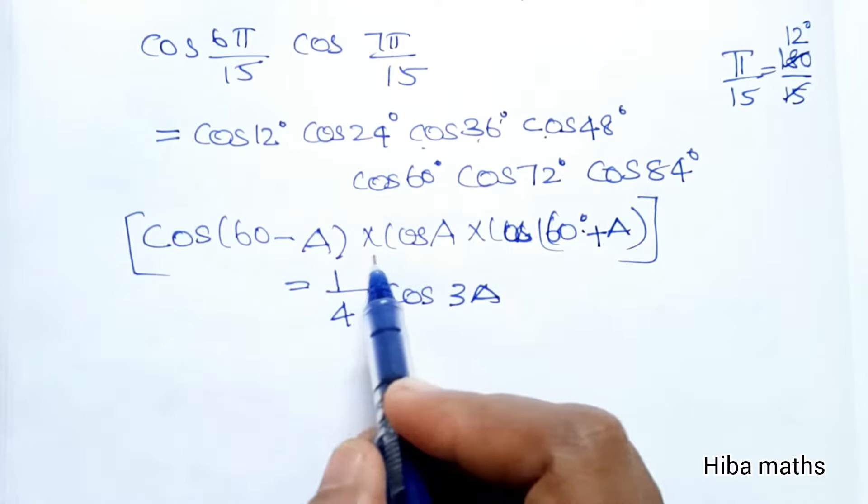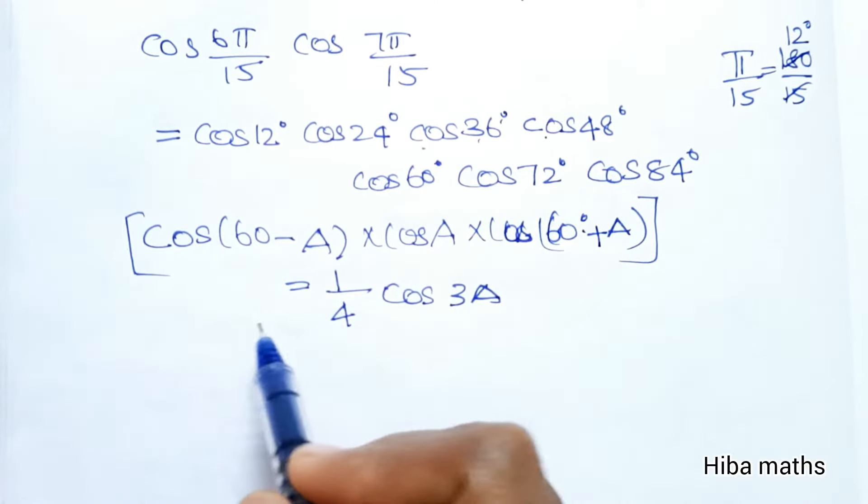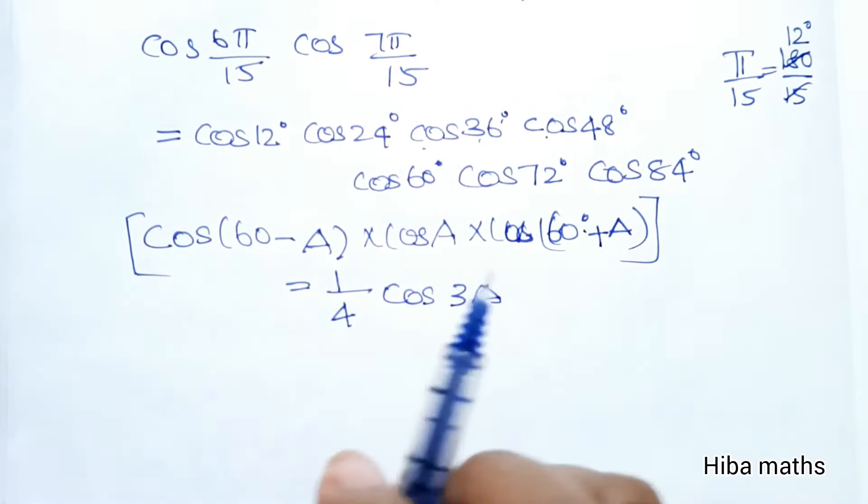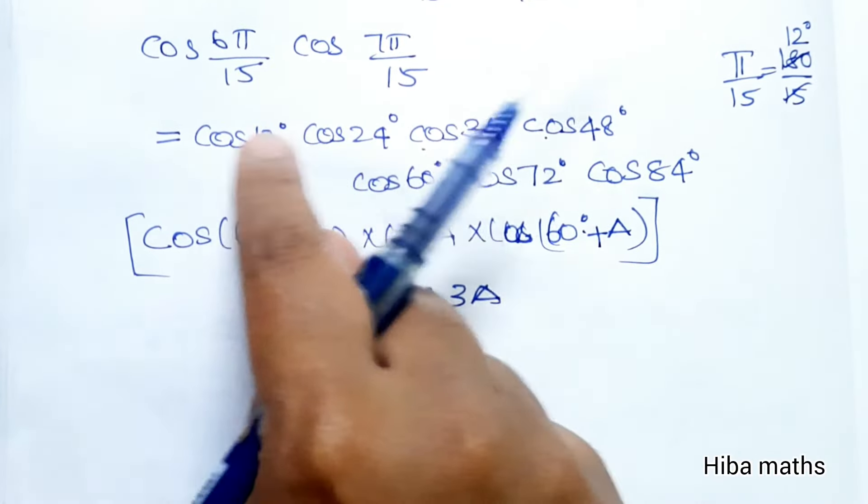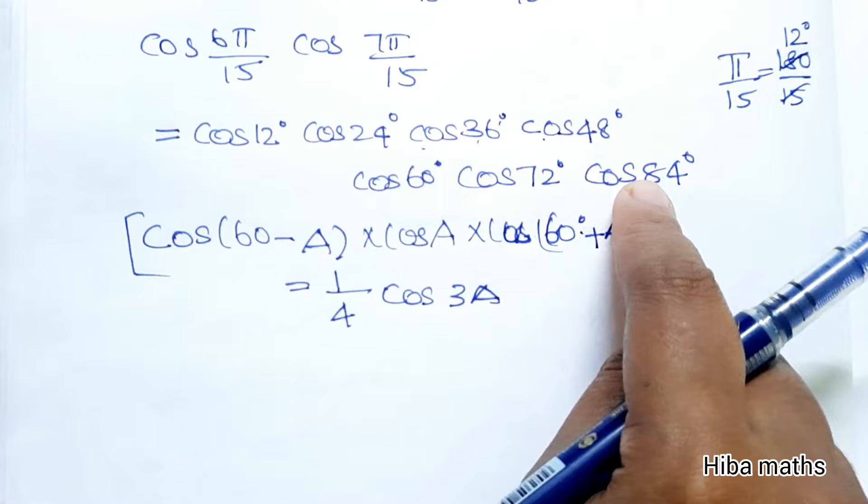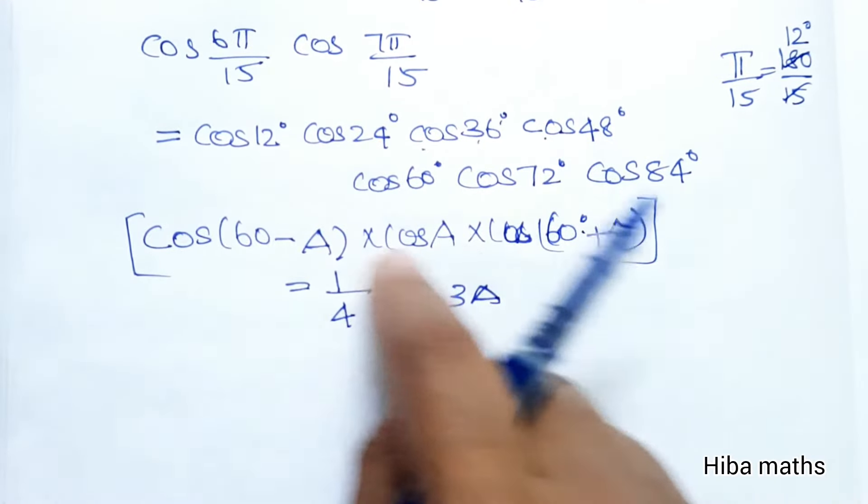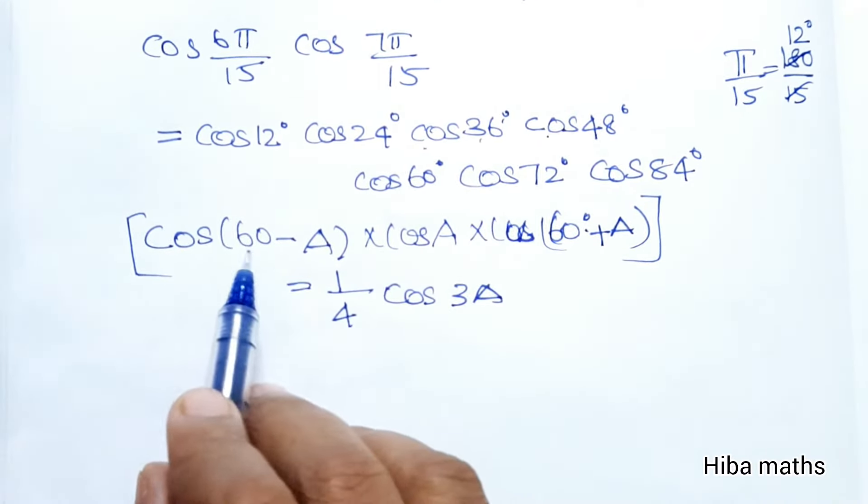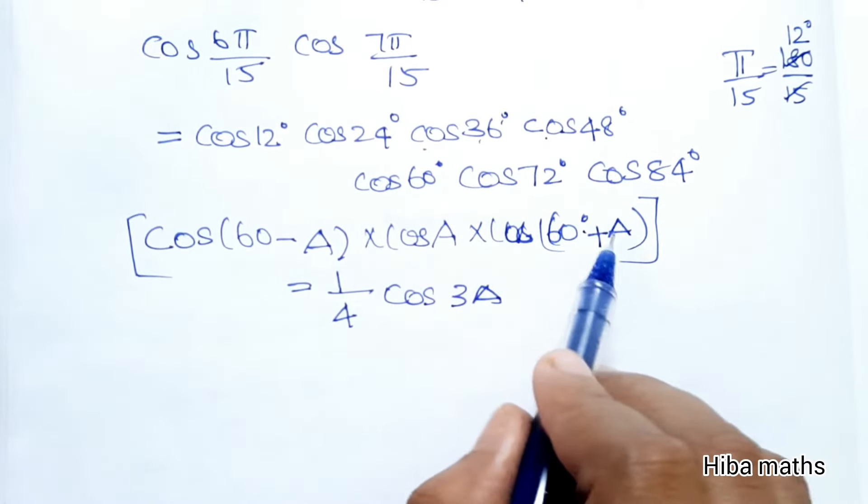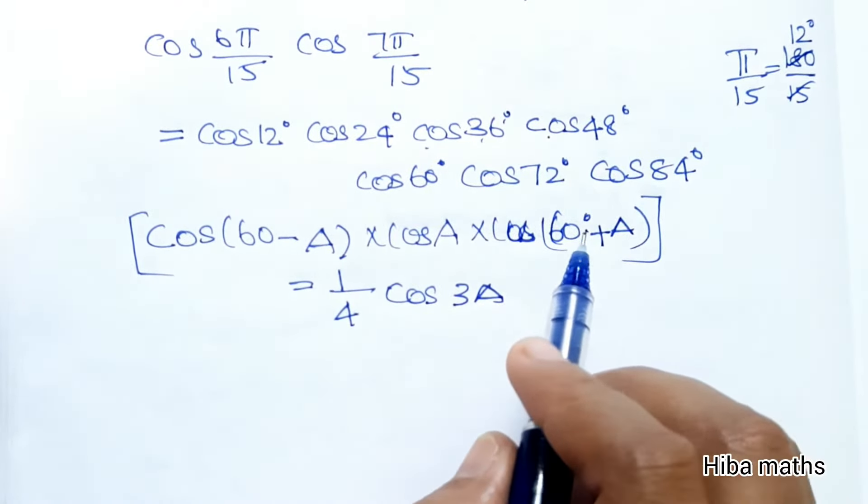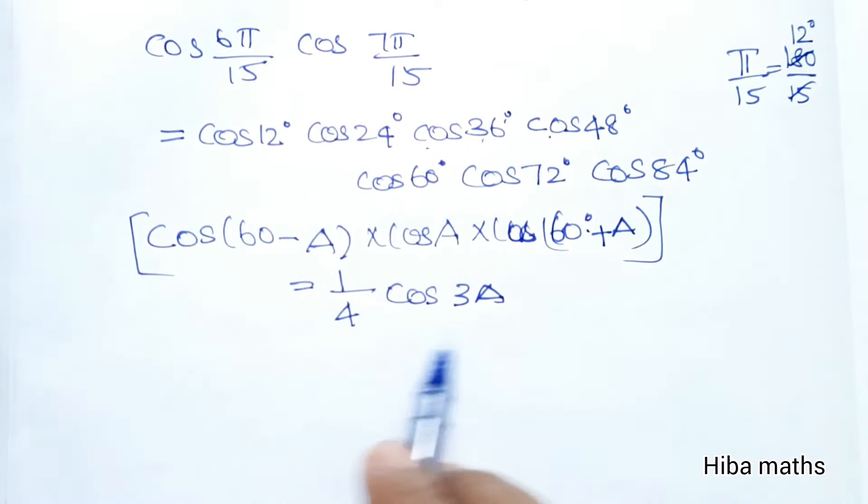We'll use the identity: cos(60° - a) × cos(a) × cos(60° + a) = (1/4)cos(3a). Here we have 7 terms, and we can arrange them into this format with three terms: the first term is 60° minus a, the second term is a, and the third is 60° plus a, which equals (1/4)cos(3a).